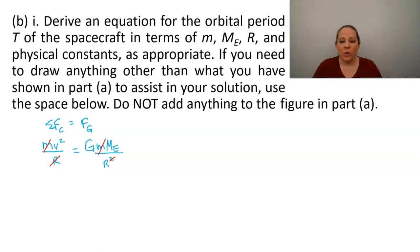So how do we get from this to something involving period? Well, we're going to remember that for something moving in a circle, the distance it travels is simply the circumference of the circle, 2 pi r, divided by the time that takes the period. So now we can substitute that into our previous expression. We'll have 2 pi r over T, the whole quantity squared, equals GmE over R.